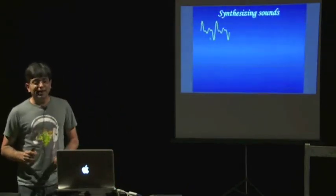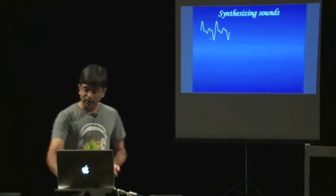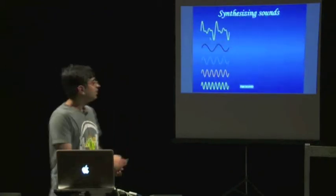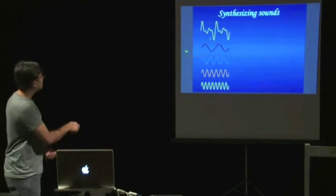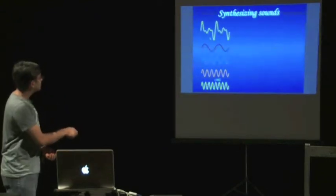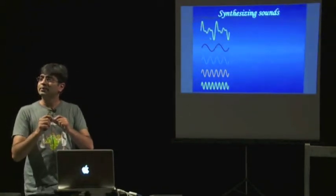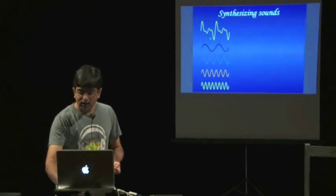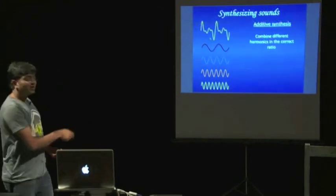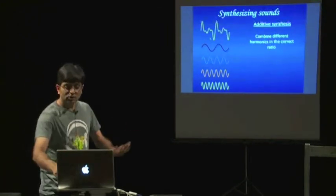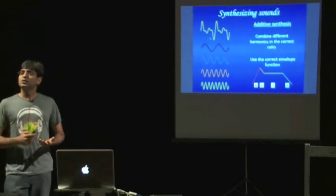Now we come to the main part — how do you actually synthesize this sound? The hint I've already given is the idea of breaking up this waveform into many different frequencies. If you have a system which can produce each harmonic and control the volume level of all of them differently, you can combine them and create the waveform you want. This is called additive synthesis — you combine the different harmonics in the correct ratio, choose the correct envelope function for the instrument you're trying to create, and there you have your instrument sound.